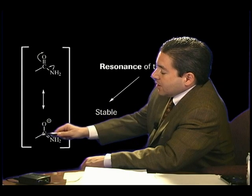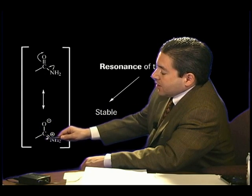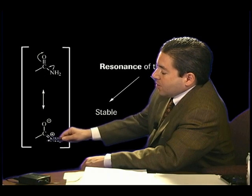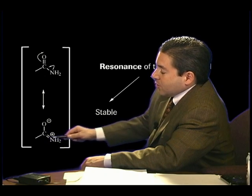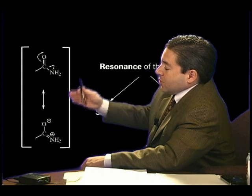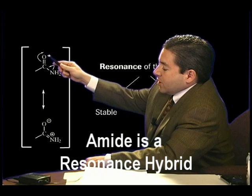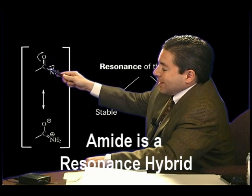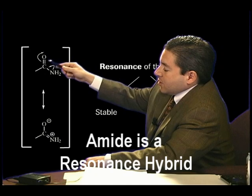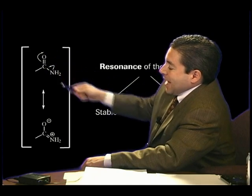The other implication is that there is some double bond character to this carbon-nitrogen bond, which is very important. So the amide is a resonance structure in which there is delocalization of electrons over the three atoms of the oxygen, the carbon, and the nitrogen. This is the amide.